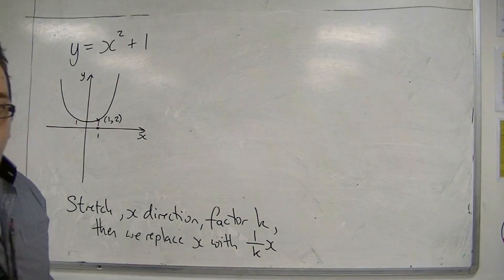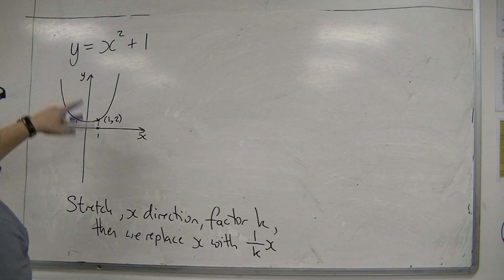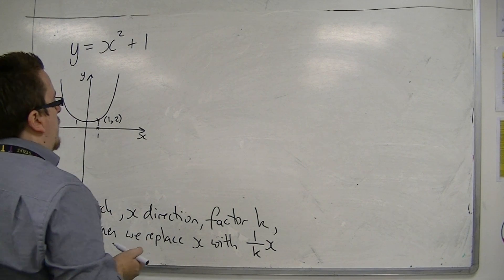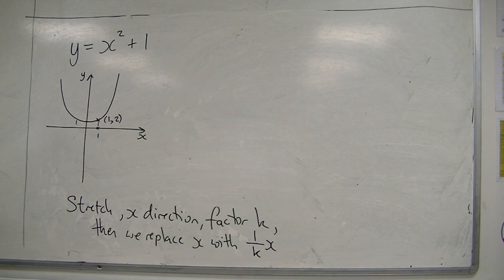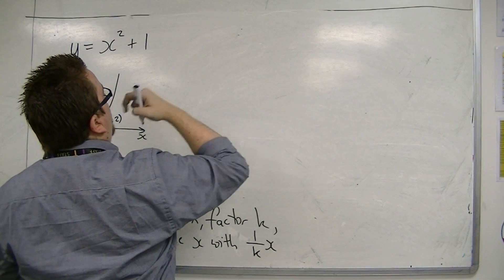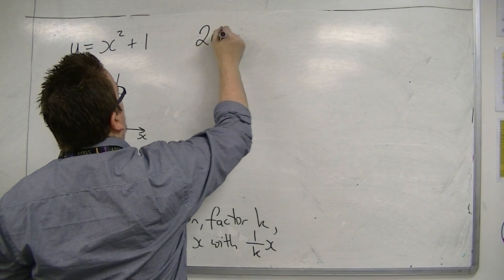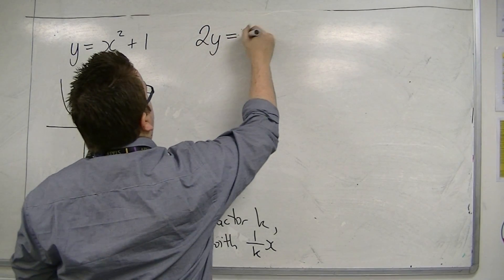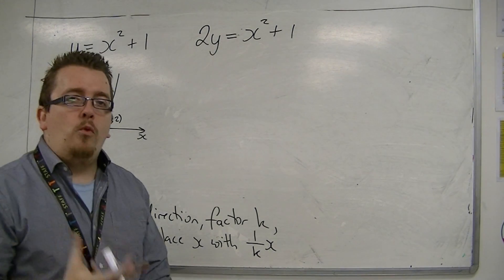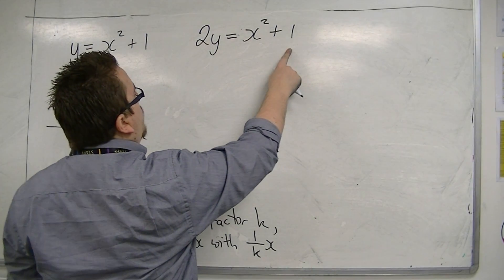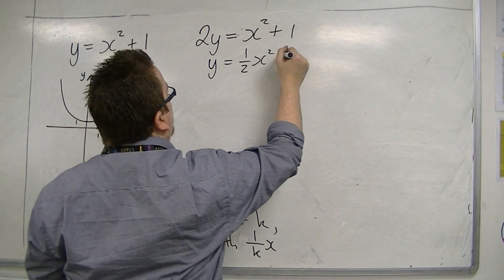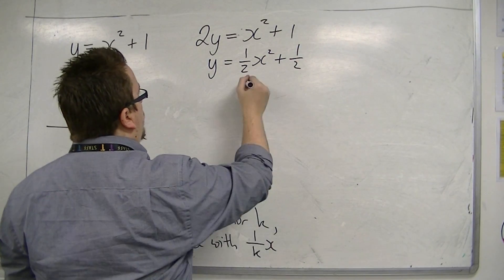Now let's have a look at the y direction. I'm going to keep with the same curve. Let's see what happens when I replace y with 2y. Initially I replaced x with 2x, this time I'm going to replace y with 2y. So 2y equals x squared plus 1. If I divide everything by 2, I get y is half x squared plus one half.